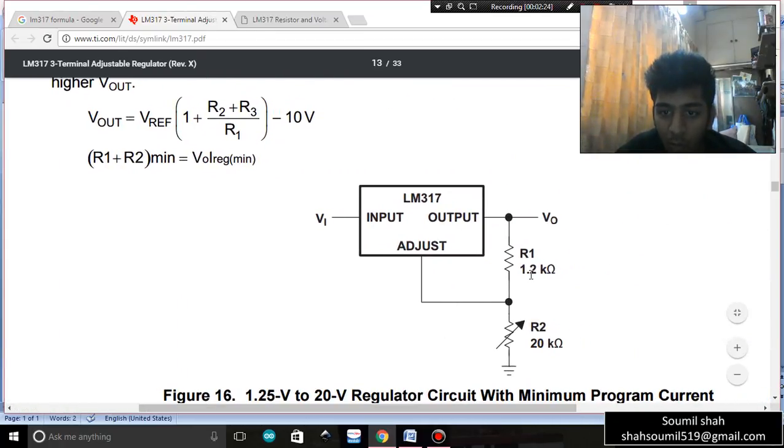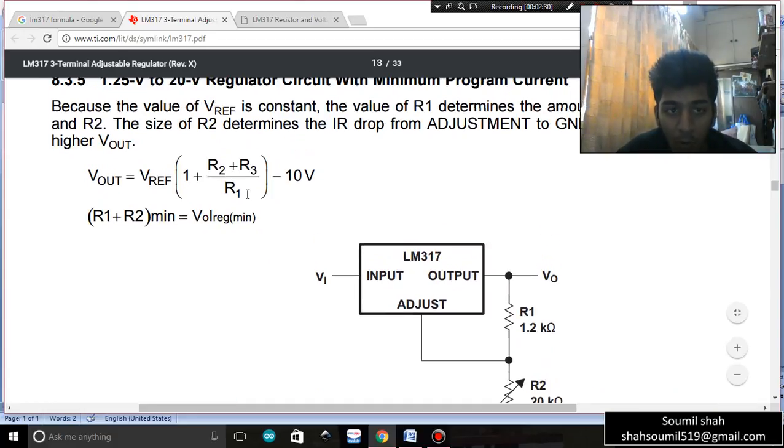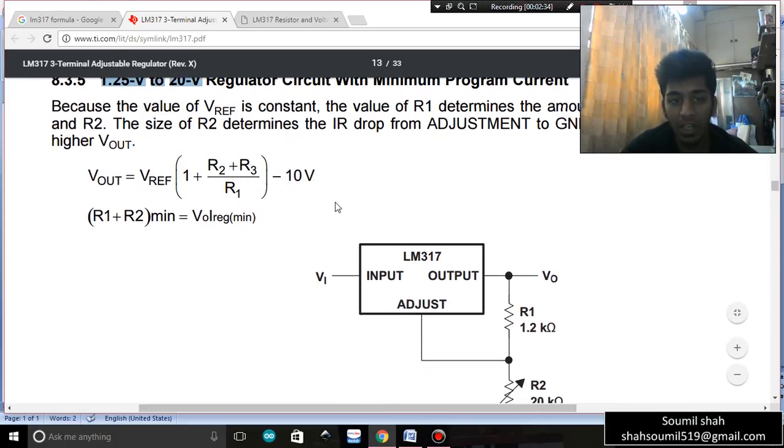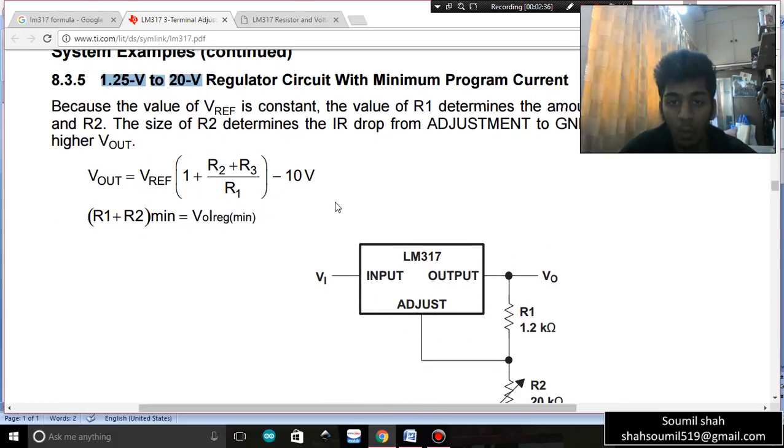With the value R1 as 1.2 kilo ohms and R2 as variable up to 20k, we can get a variable output voltage from 1.25 volts to 20 volts. So it is very useful for making a variable voltage if you want a variable voltage in your project or if you want to control the speed of the motor. We use LM317.